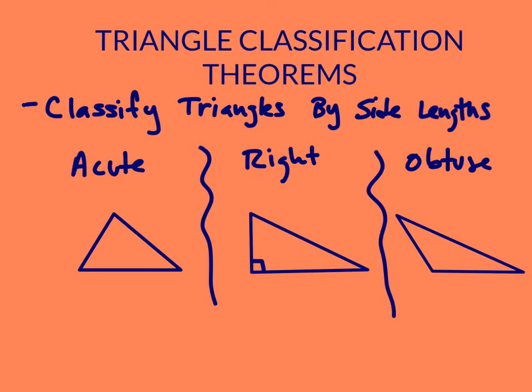I'm going to label their side lengths. Starting with the right triangle, I label my smallest sides A and B, and I label my longest side — my hypotenuse — C. I'm going to do the same thing for my acute and obtuse triangles: the smaller two sides are A and B, and the longest side is C.